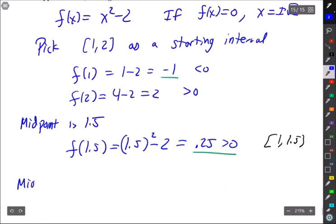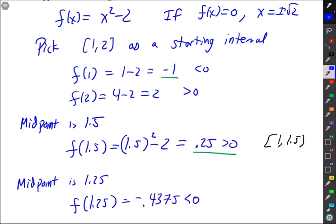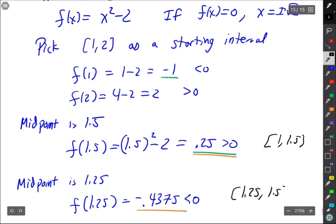Next step, the midpoint is 1.25. f(1.25) comes out to be -0.4375 which is negative which means I want to pair that with this positive number to give me a new interval of [1.25, 1.5].